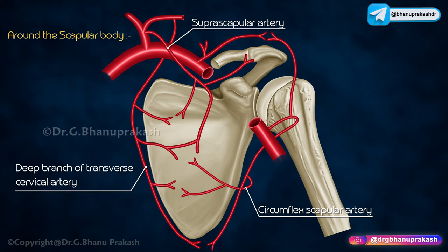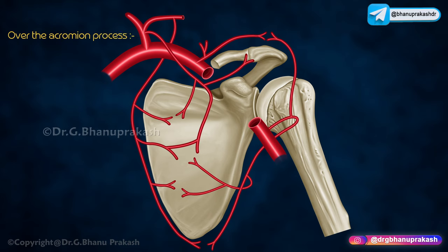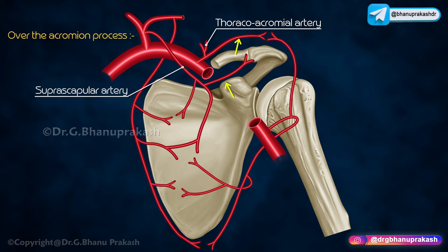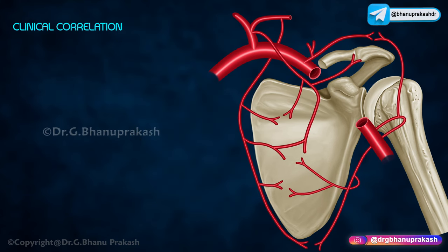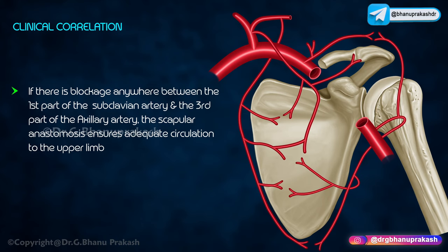Over the acromion process, anastomosis occurs between the acromial branch of the thoracoacromial artery, the acromial branch of the suprascapular artery, and the acromial branch of the posterior circumflex humeral artery. Clinical correlation: if there is blockage anywhere between the first part of the subclavian artery and the third part of the axillary artery, the scapular anastomosis ensures adequate circulation to the upper limb.